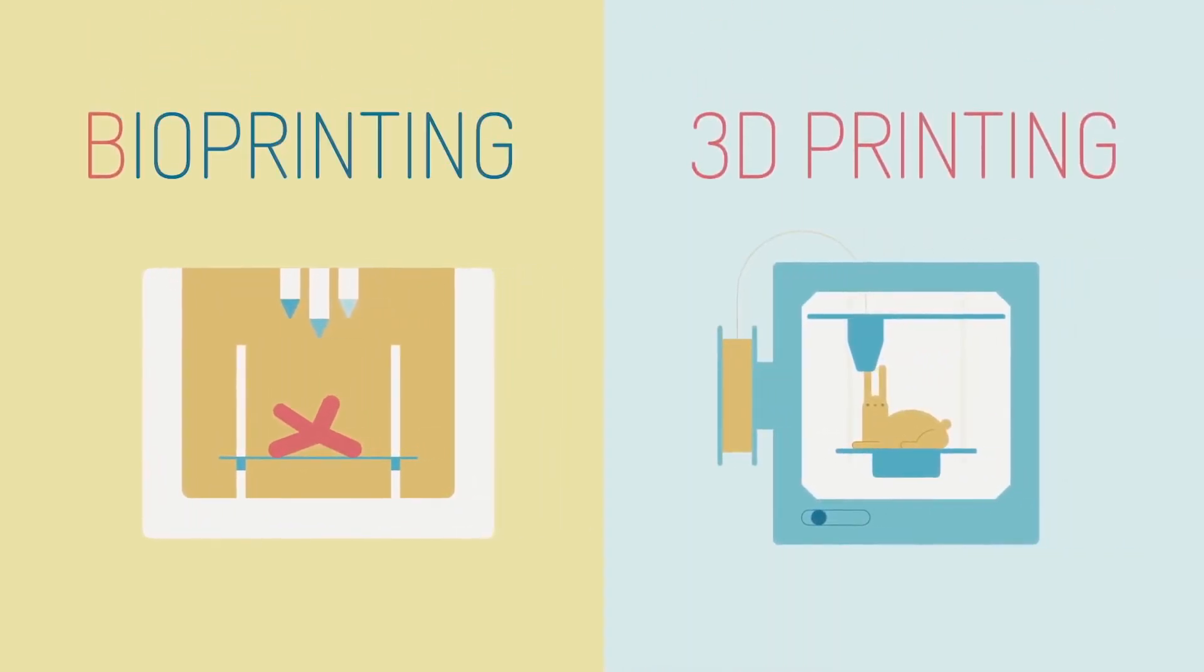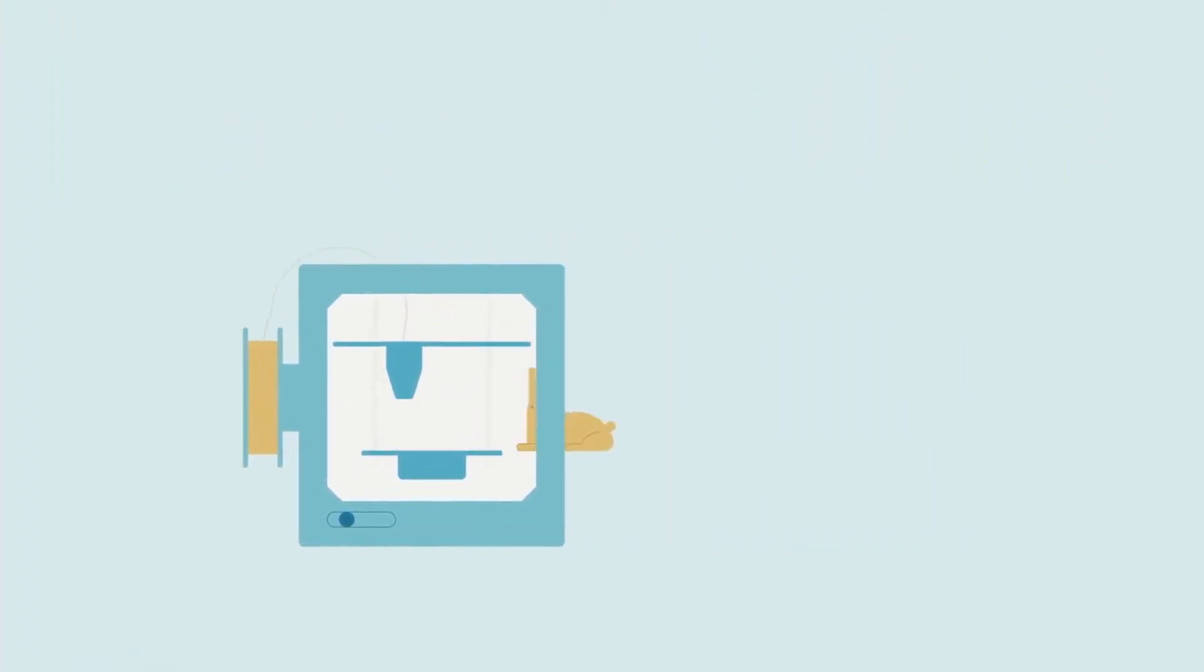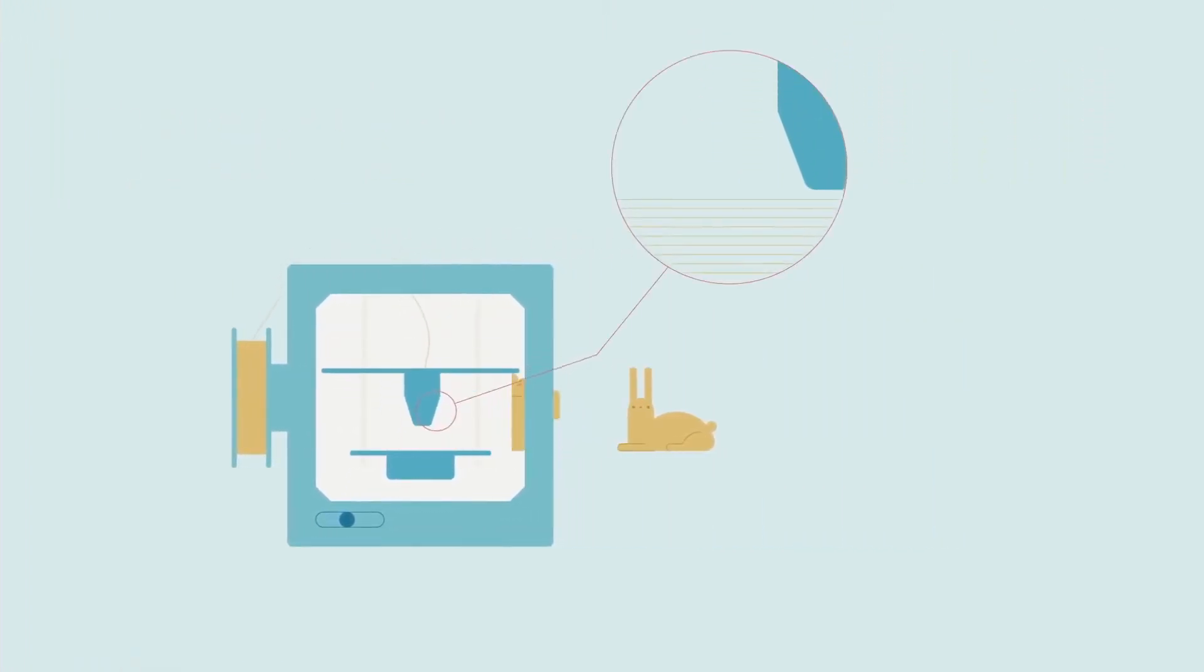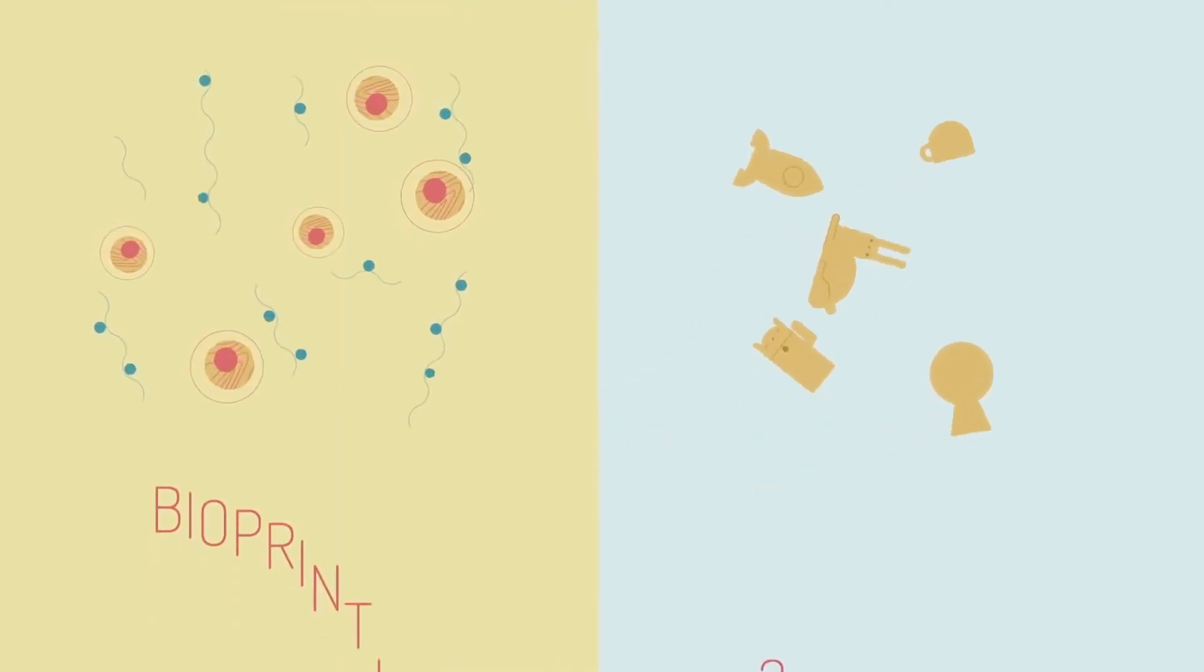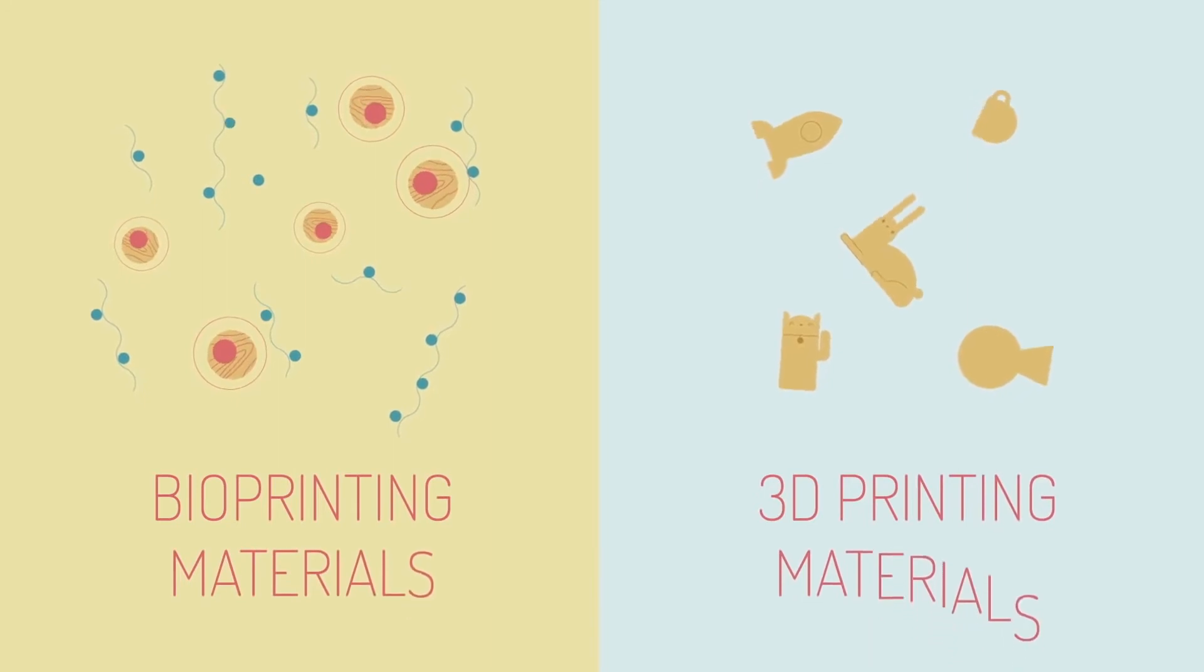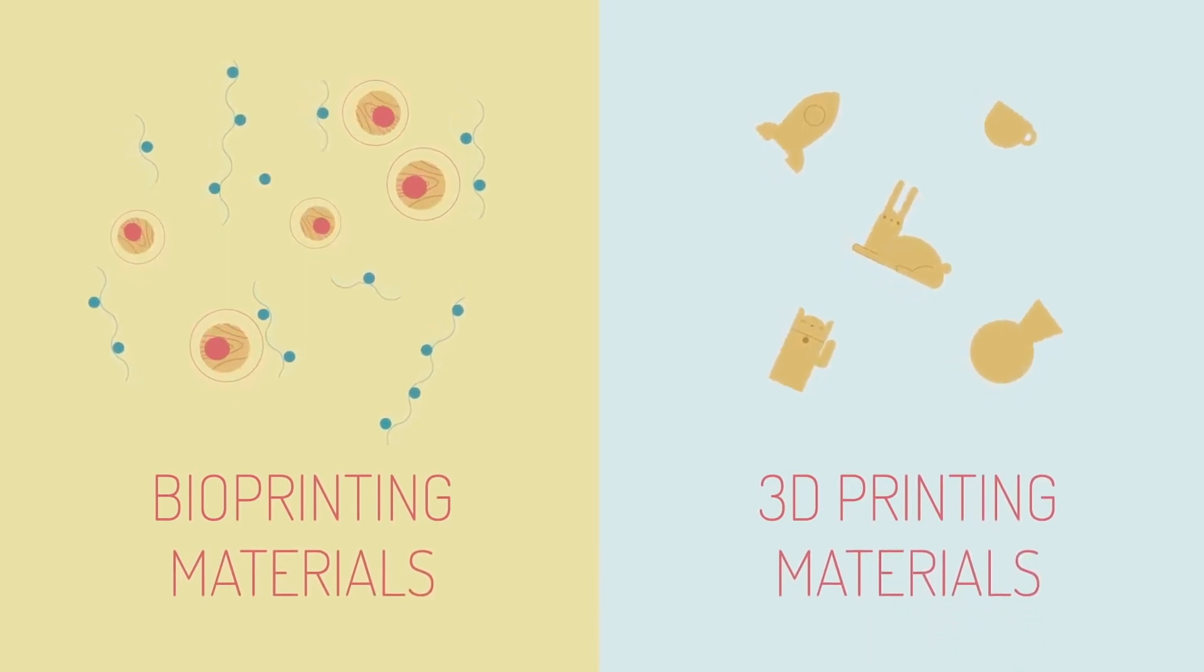Bioprinting is a biological cousin of 3D printing, a technique that deposits layers of material on top of each other to construct a three-dimensional object one slice at a time. Instead of starting with metal, plastic, or ceramic, a 3D printer for organs and tissues uses bio-ink, a printable material that contains living cells.